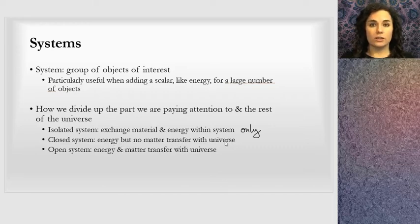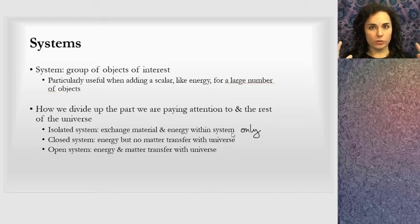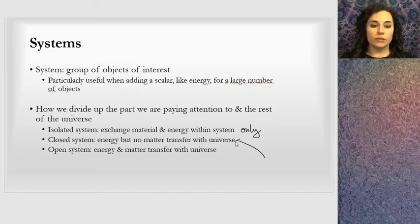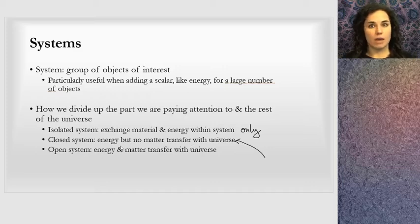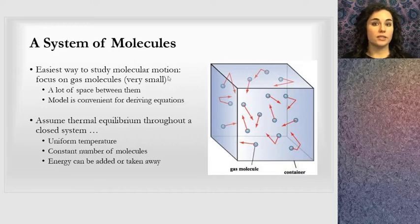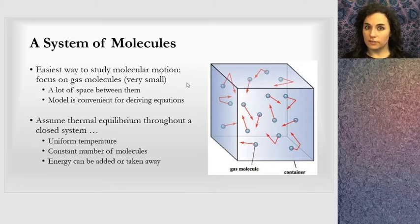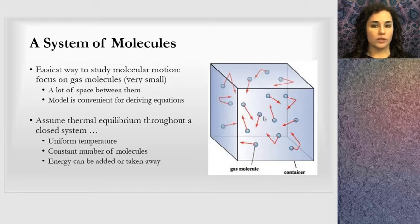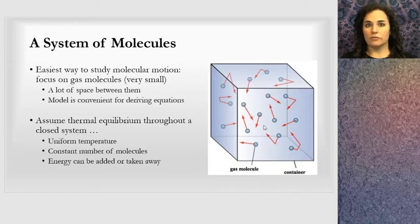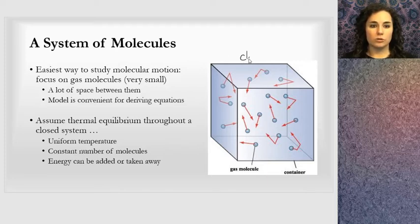An open system means there's free exchange of energy and matter with the surroundings. Let's look at a system of molecules. The easiest way to study molecular motion is to focus on a single gas molecule. We're looking at very small things with a lot of space between molecules. It's a convenient model based on what we know from physics with energy and velocity for deriving equations. We're going to assume this is a closed system—no molecules in or out, but energy can move in or out.